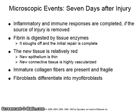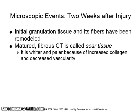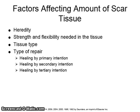Fibroblasts differentiate into myofibroblasts. Two weeks after the injury, the initial granulation tissue and its fibers have been remodeled. Mature fibrous connective tissue is called scar tissue. It is whiter and paler because of increased collagen and decreased vascularity. Factors that affect the amount of scar tissue formed include heredity, the strength and flexibility needed in the tissue, the tissue type, and the type of repair. Tissue can repair by primary, secondary, or tertiary intention.